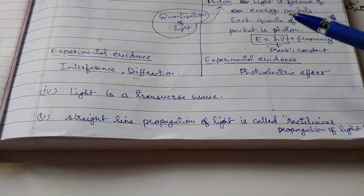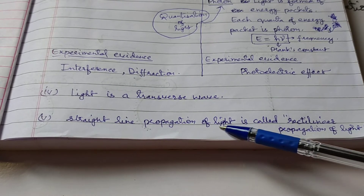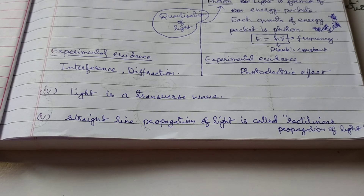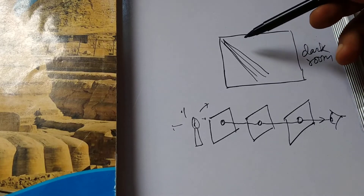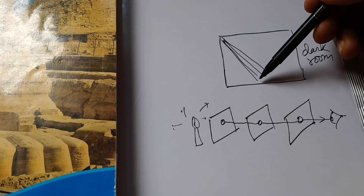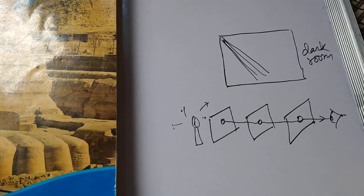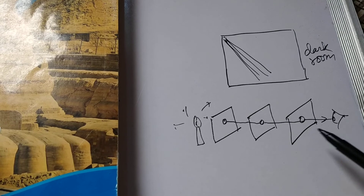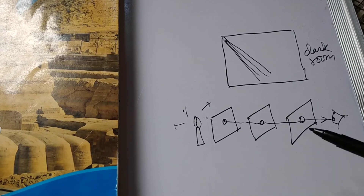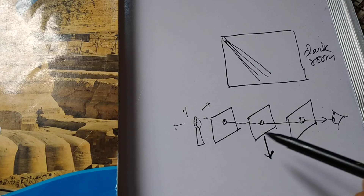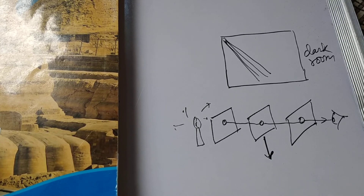Another fact about light is its straight-line propagation, called rectilinear propagation of light. You can observe this in a dark room — if light enters from somewhere, it travels in a straight-line direction. Newton's experiment also demonstrated this: if a candle is placed in a straight line with your eye, you can see it; if it is displaced even slightly, you cannot. This means light travels in a straight-line path, and this is known as rectilinear propagation of light.